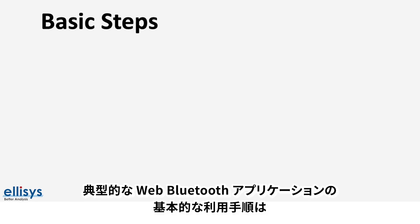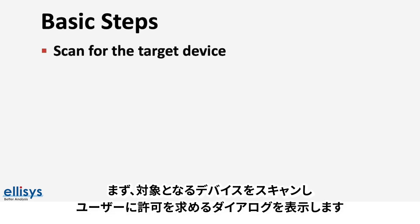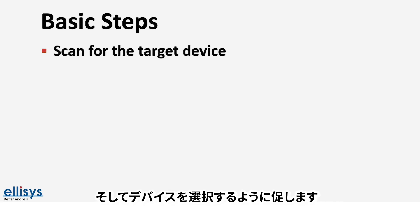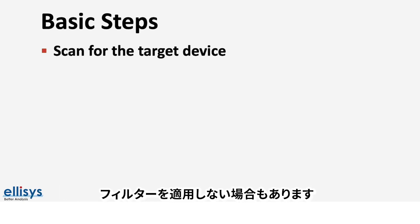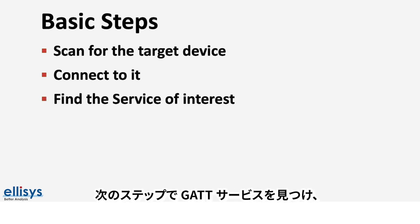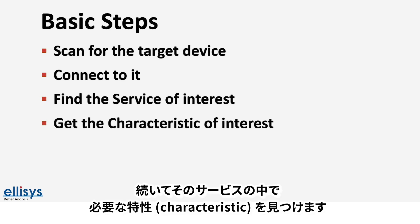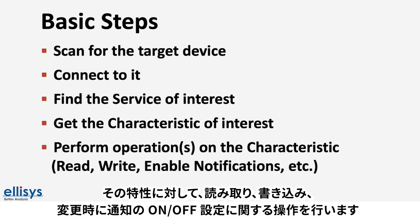The basic steps of a typical web Bluetooth application are very similar to embedded or mobile BLE applications. First, scanning for a target device, which will display a dialogue to the user to request their permission and ask them to select a device. Scanning could involve a filter to only show devices that support specific GATT services, or it could be with no filter applied. Second, connecting to the device. The next step would be to find the GATT service of interest, and subsequently the characteristic of interest within that service. Finally, the last step is to perform an operation on that characteristic, such as reading its value, writing to its value, or subscribing to notifications to get notified when the value changes.